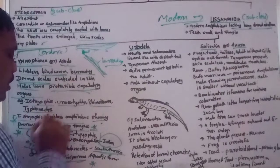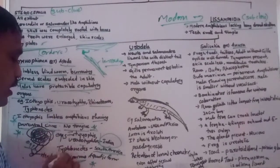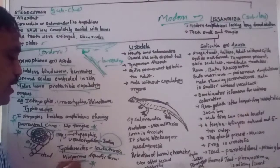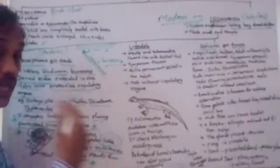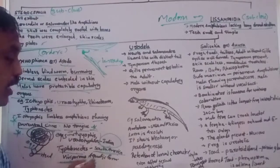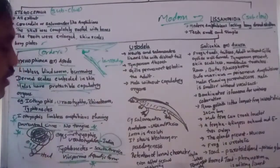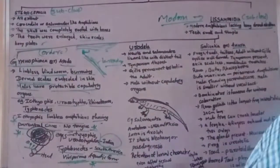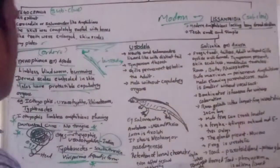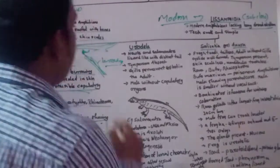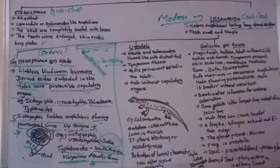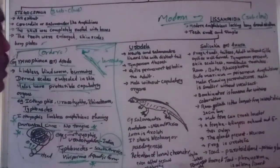All other Gymnophiona lay eggs, but Typhlonectes is viviparous — it gives birth to young ones. It is mostly aquatic, living in water. This concludes information about the order Gymnophiona.